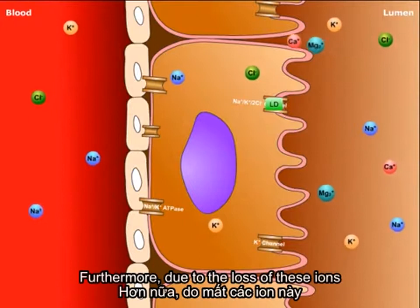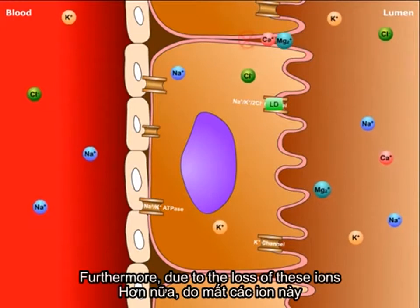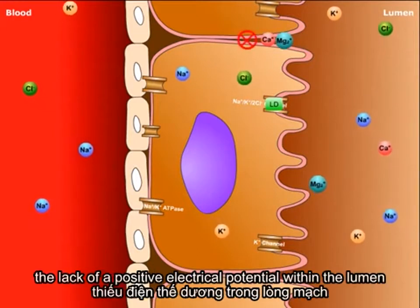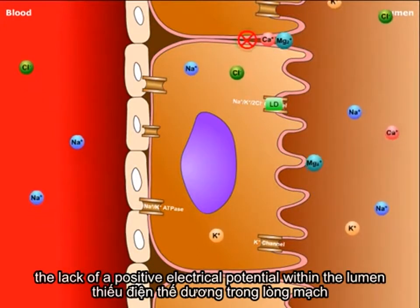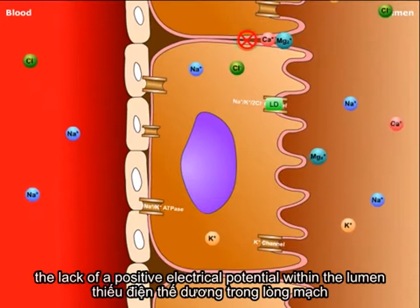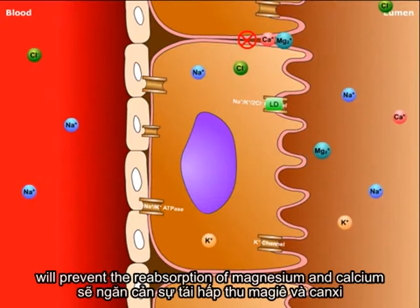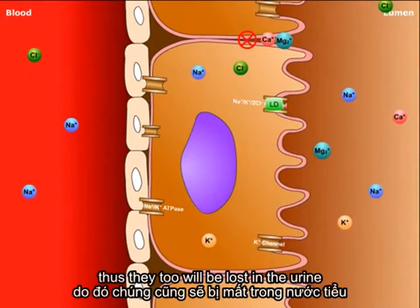Furthermore, due to the loss of these ions, the lack of a positive electrical potential within the lumen will prevent the reabsorption of magnesium and calcium. Thus, they too will be lost in the urine.